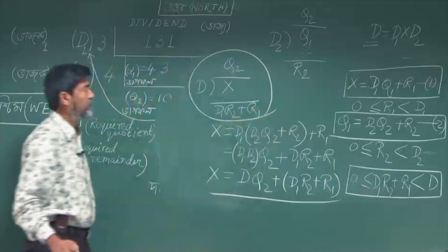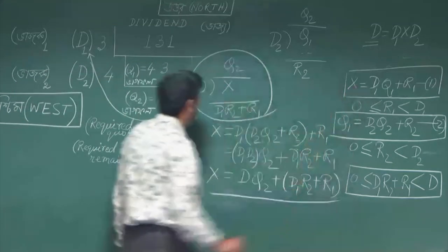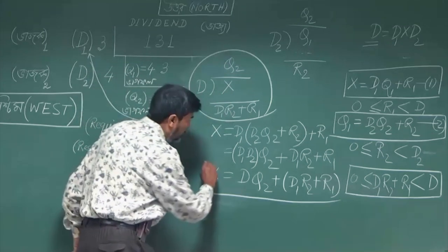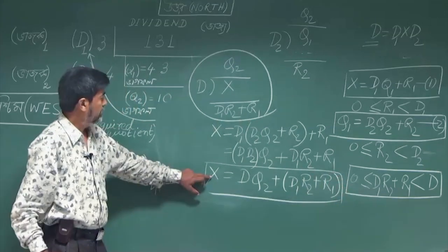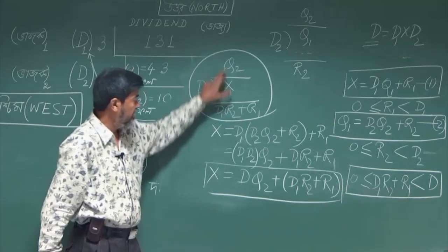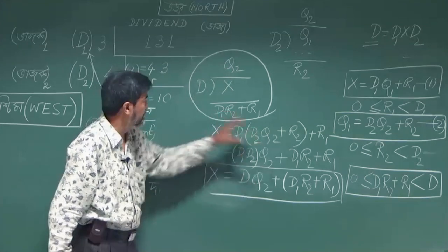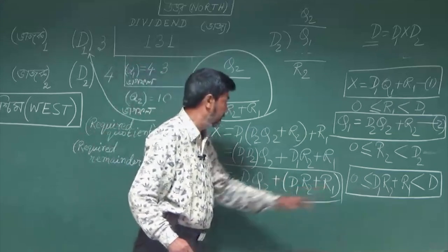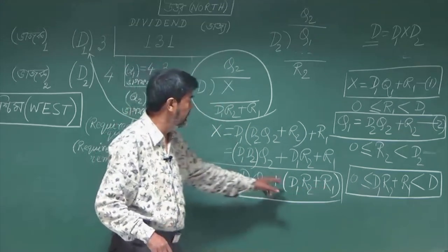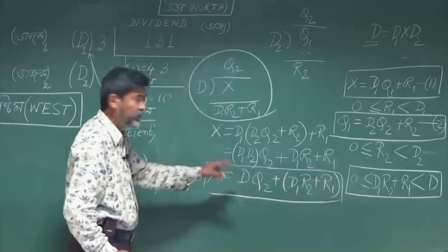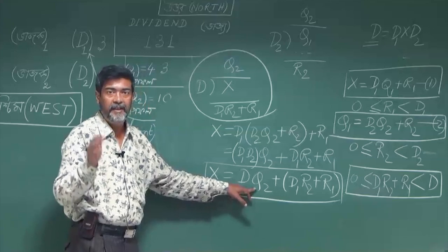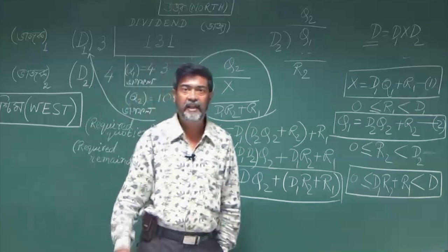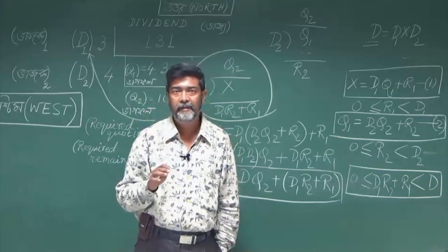In that case, using the similar division algorithm — where the dividend equals the divisor times the quotient plus the remainder — we have established that the remainder for this direct division is d1·r2 plus r1, and the quotient is q2, which is the quotient obtained in the second stage of our division. That's all for today's class. Thank you very much for being here. Thank you once again.